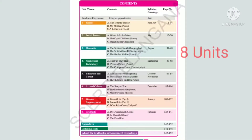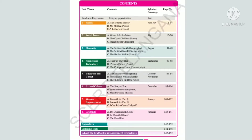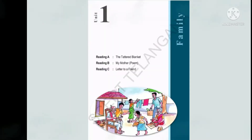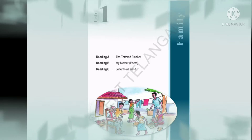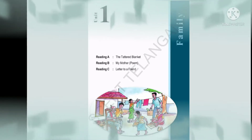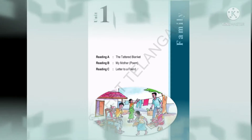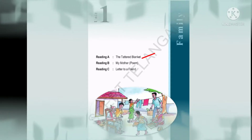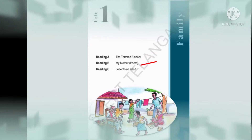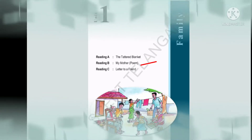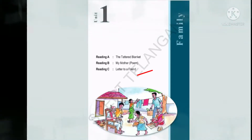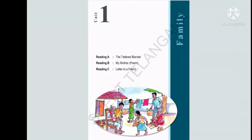Totally we have 8 units. Today we are going to begin Unit 1. Welcome to the unit 'Family.' This unit helps to understand the importance of family. This unit is classified into 3 reading sections: Reading A – The Tattered Blanket, Reading B – My Mother, and Reading C – Letter to a Friend. The theme of the unit is family.